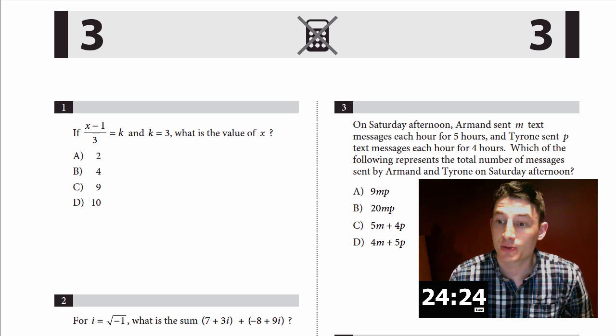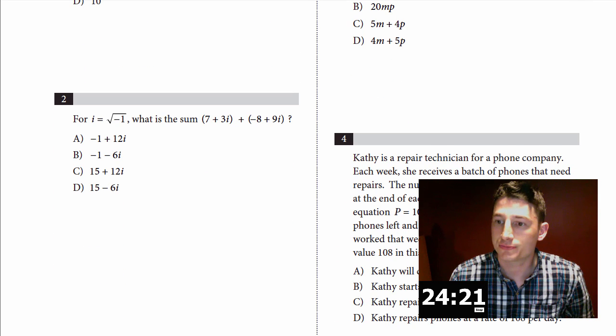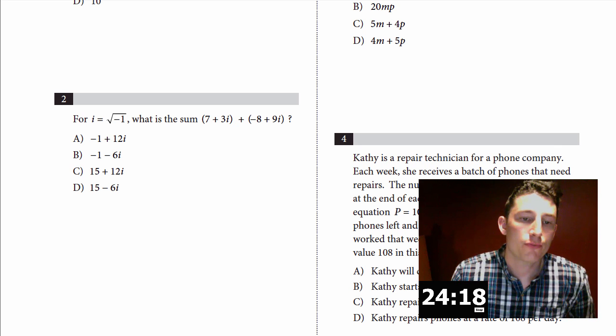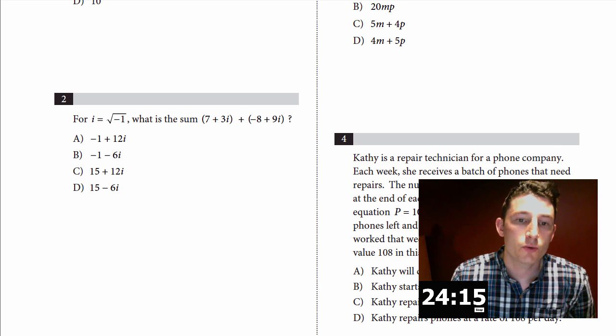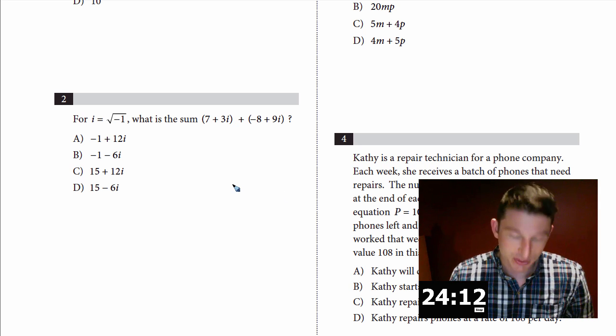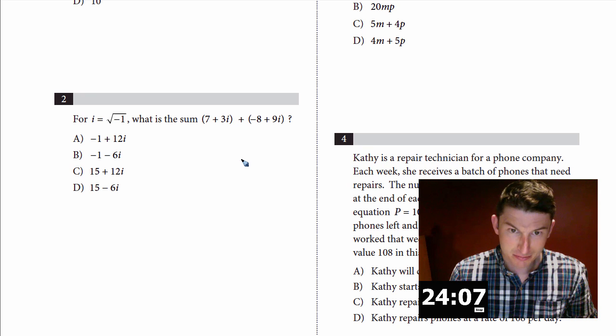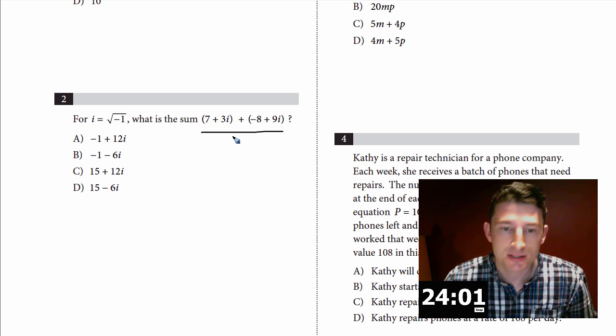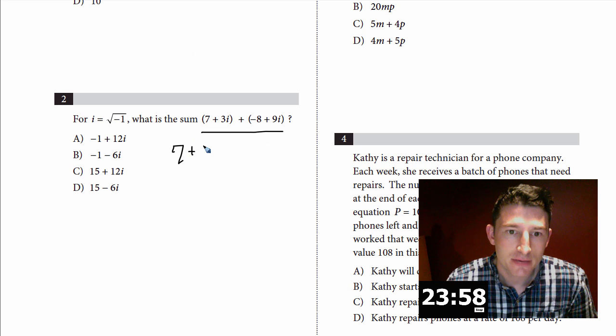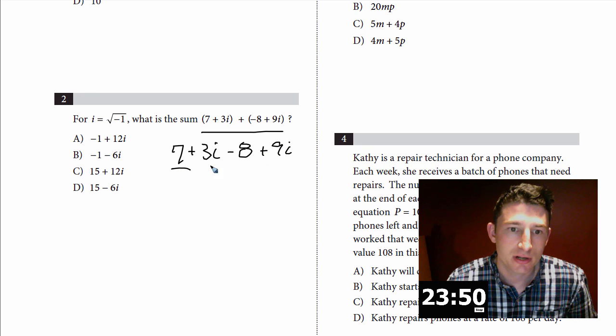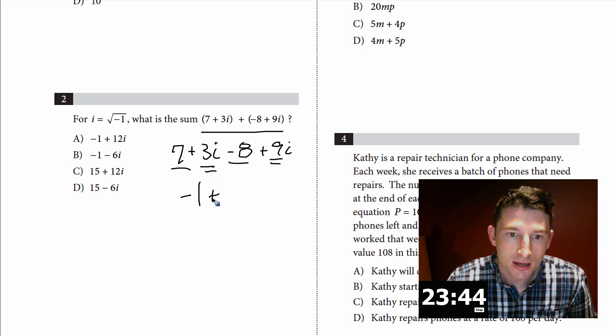Number two: for i = √-1, what is the sum of these two expressions? Looking at this right away: 7 + 3i plus (-8 + 9i). There's too many parentheses, we don't need the parentheses. If you rewrote this: 7 + 3i plus times a negative, that's minus 8 plus 9i. We're just going to combine: 7 and -8 is -1, and 3i and 9i is 12i. So -1 + 12i, done, move on.